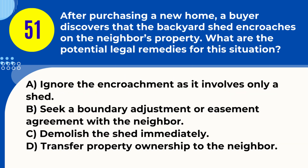Question 51. After purchasing a new home, a buyer discovers that the backyard shed encroaches on the neighbor's property. What are the potential legal remedies for this situation? A. Ignore the encroachment as it involves only a shed. B. Seek a boundary adjustment or easement agreement with the neighbor. C. Demolish the shed immediately. D. Transfer property ownership to the neighbor. Answer: B. Seek a boundary adjustment or easement agreement with the neighbor. Explanation: In California, resolving an encroachment like a shed on a neighbor's property may involve legal solutions such as boundary adjustments or negotiating an easement.